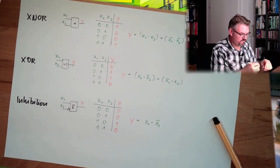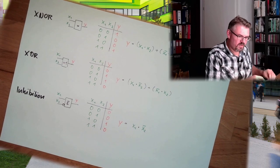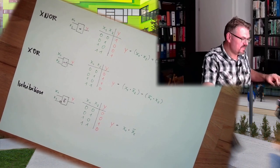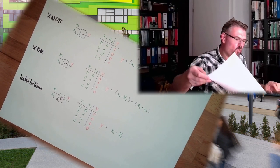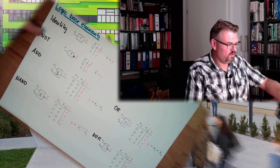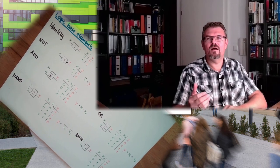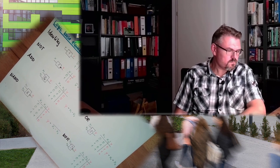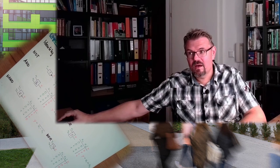These extended elements are not really base elements in my opinion, because they can be built with the real base elements. The real base elements are identity, NOT, AND, OR, NAND, and NOR. In the next video, we are going to discuss Boolean algebra and Boolean equations, and then we are going to see how to use those logic base elements. Thank you very much for listening, goodbye.